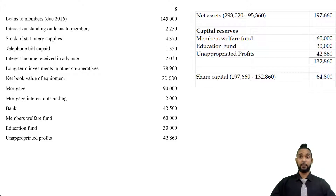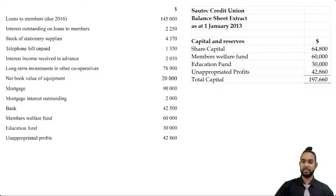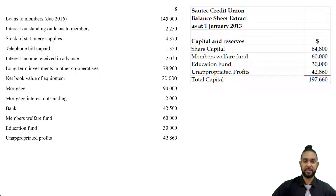Scrolling back up to the actual answer for part three, we add the $64,800 share capital figure and then find the total for the capital section of $197,660. I think there was probably an error in the paper — they either forgot to give you the share capital or enough information to find it, because I can't see all of that working being worth only three marks. Mistakes happen. Let's move on and take a look at part B.